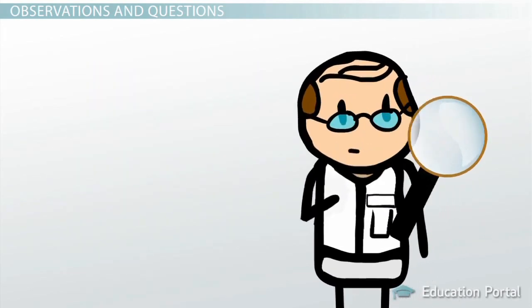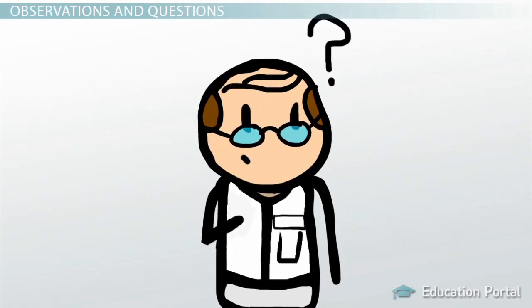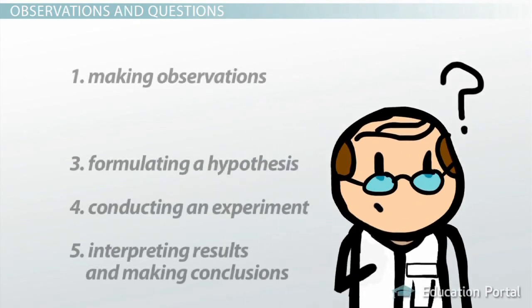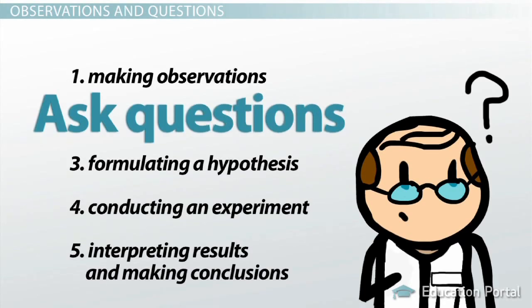Once a scientist has made observations, they are often curious about what they have seen and want to learn more. At this point, scientists begin to ask questions about their observations, which is the second step in the scientific method.